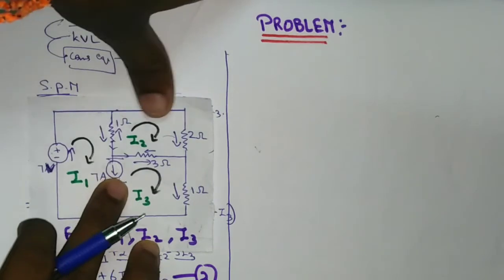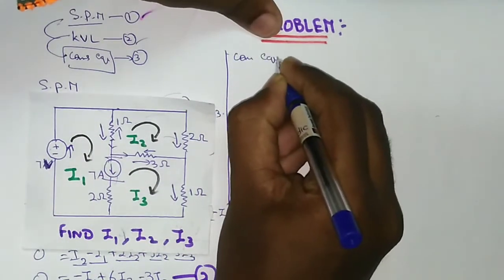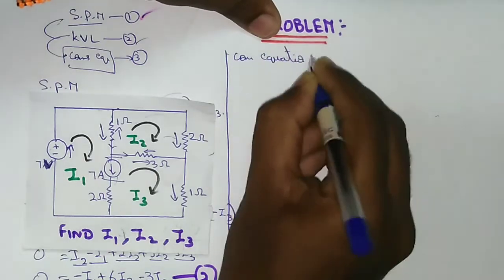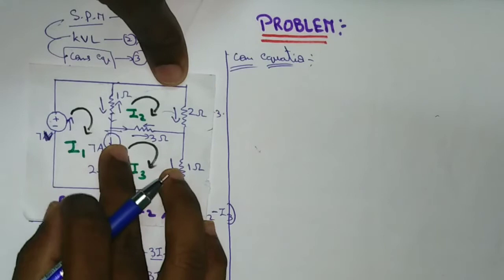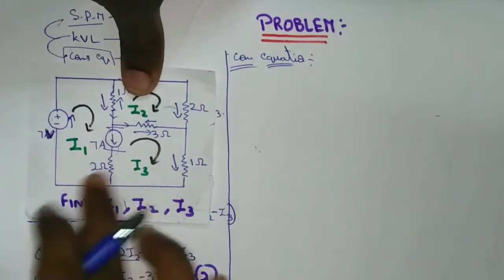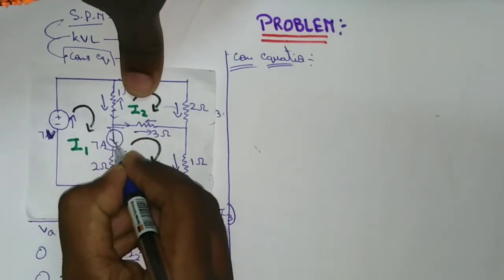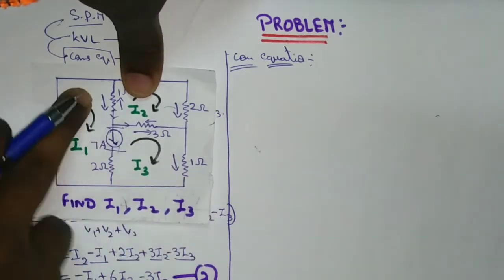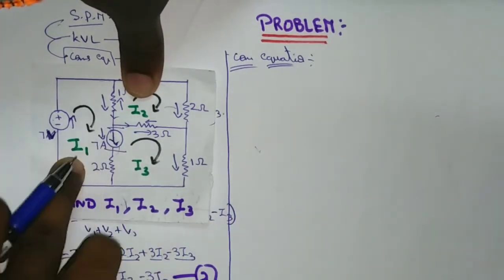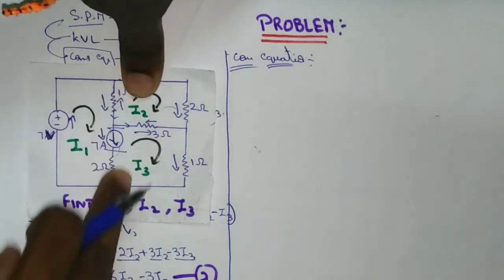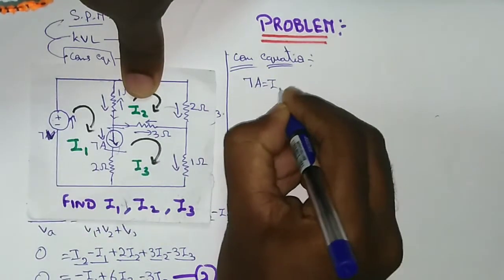The direction is constant. If the key is here, the direction of I1 is here, then 7 amps is equal to I1, because the direction of I1 is the same — so 7 amps is equal to I1.